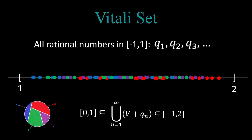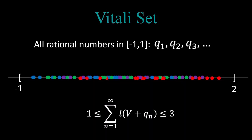So what does all this mean? Well, all these infinite copies of V must have the same length and their total sum must lie between 1 and 3 inclusive. Therefore, there is no such possible number that we can assign to the length of V.